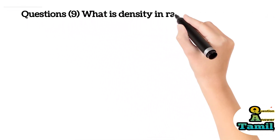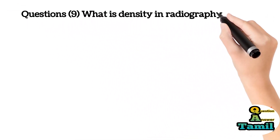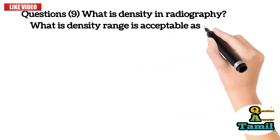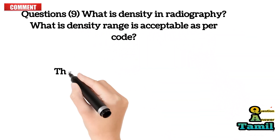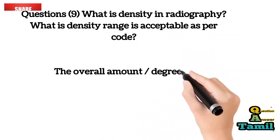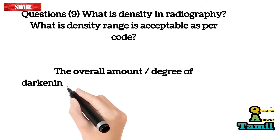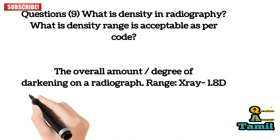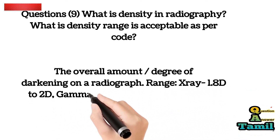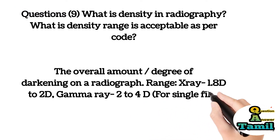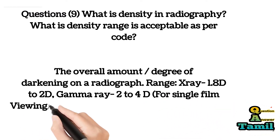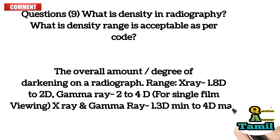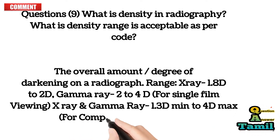Question 9: What is density in radiography? What density range is acceptable as per code? Density is the overall degree of darkening on a radiograph. Acceptable ranges: X-ray: 1.8D to 2D; Gamma-ray: 2D to 4D for single film viewing. For composite film viewing: X-ray and Gamma-ray 1.3D min to 4D max.